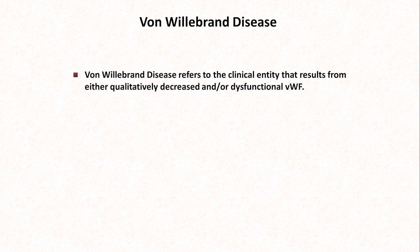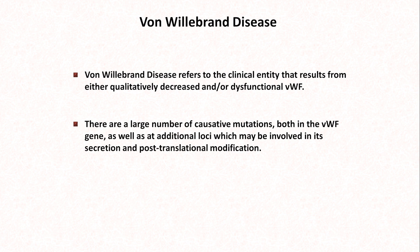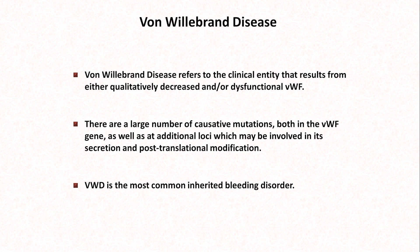So what is von Willebrand disease? It refers to the clinical entity that results from either quantitatively decreased and/or dysfunctional von Willebrand factor. There are a large number of causative mutations both in the von Willebrand factor gene as well as in additional loci which may be involved in its secretion and post-translational modification. Von Willebrand disease is the most common inherited bleeding disorder. Reported prevalences vary greatly depending upon whether one considers only those patients with abnormal lab tests or also requires a history of clinically relevant bleeding for the diagnosis.